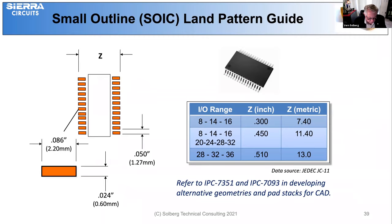For leading components still part of their process — the small outline IC, where used, we have to consider their land pattern. On the rigid side of the board, the land pattern is pretty much what you'll find in IPC 7351 or 7093. This shows a typical JEDEC SOIC land pattern for the 8, 14, 16 lead narrow package, and the wider package for 8, 14, 16, and even 20, 24, 28, 32 leads. These are just recommendations on the rigid board section. Surface mount parts on flexible circuits will have slightly different land pattern geometry.